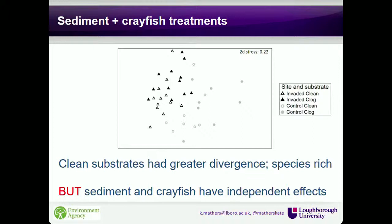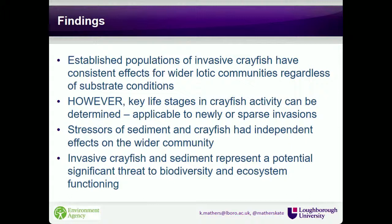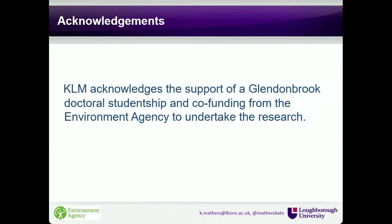Finally, considering sediment and crayfish as a whole: when we considered clean versus clogged substrates, clean substrates had the greater divergence in crayfish effects, as they're species-rich and more likely to show a marked effect when crayfish predate. Sediment and crayfish did have independent effects, plotting as four distinct communities in ordination space. This is probably because the crayfish have been there for 20 years and the community effects are already well established. In conclusion: invasive crayfish have consistent effects regardless of substrate, we can detect key life cycle stages in macroinvertebrate communities, and the stressors of sediment and crayfish have independent effects representing significant threats to ecosystem functioning.